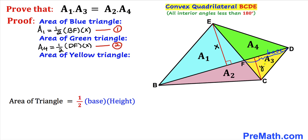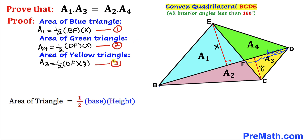Now let's calculate the area of this yellow triangle whose base is DF and its height is Y. So the area A sub 3 equals one half times DF times Y. Let's call this equation number three.